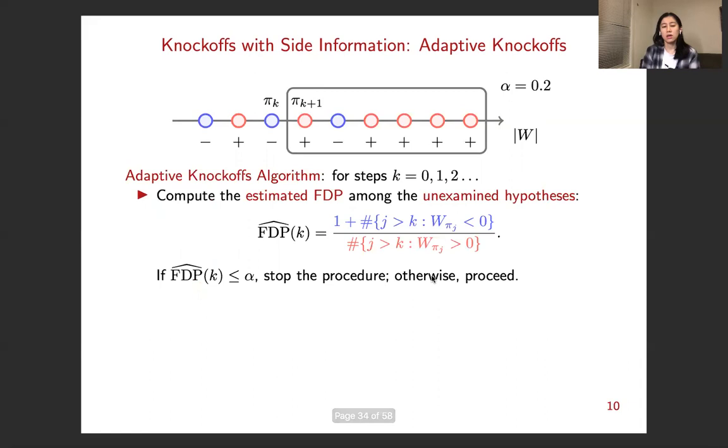For the adaptive knockoffs procedure, at the beginning of this procedure, we consider all the hypotheses to be unexamined. And then it proceeds to examine them sequentially. So at step k, it first computes an estimated FDP among the unexamined hypotheses, which is essentially the number of features with negative wj's over the number of features with positive wj's. For example, in this plot, it is just the number of blue balls over the number of red balls in the gray box with some modification. So if this estimated FDP is below a desired level, we stop the procedure and select the remaining unexamined hypotheses with a positive wj. For example, in this plot, it is the red balls in the gray box.